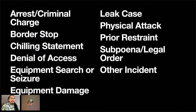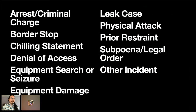The tracker organizes incidents into 11 categories. Some are easier to be comprehensive about than others. For example, it's pretty clear what qualifies as a leak prosecution or a journalist being arrested. But we also have categories like chilling statements, which is both a little muddier and more expansive — we couldn't possibly be comprehensive, but we still think it's important to cover politicians and people in power saying things that have a chilling effect on journalism. We also have a catch-all category for incidents that deserve coverage but don't fit neatly anywhere else.